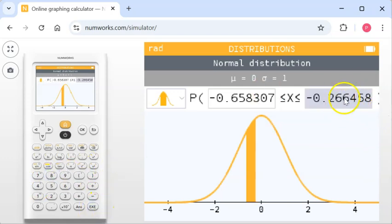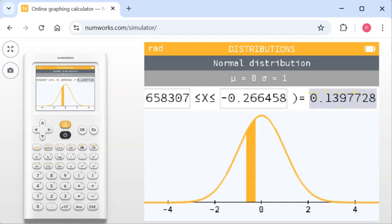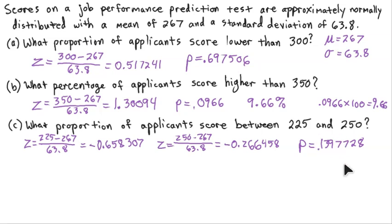When I press Execute, here's my p-value. The shaded sliver between Z-scores of negative 0.658 and negative 0.266 gives us a proportion of 0.139728. So the proportion of applicants scoring between 225 and 250 is 0.139728 — about 13.97% of them.